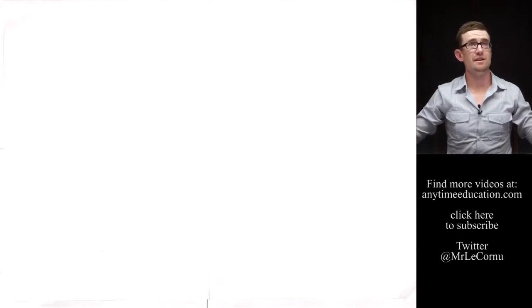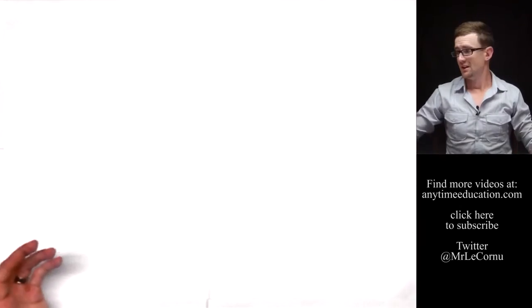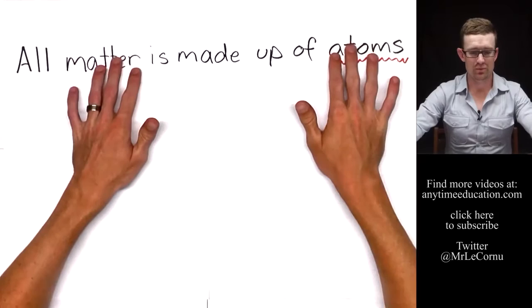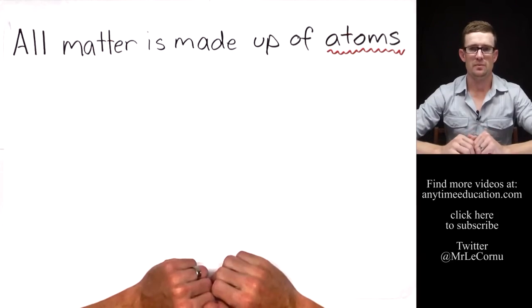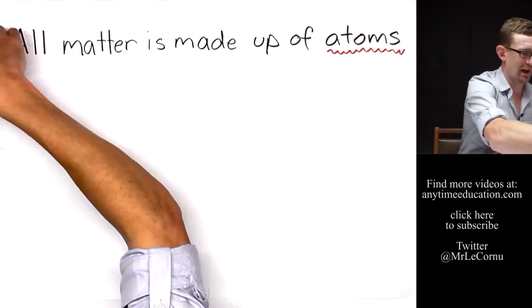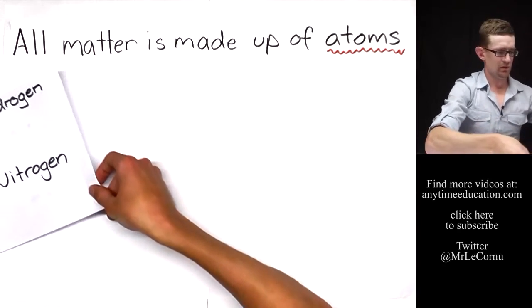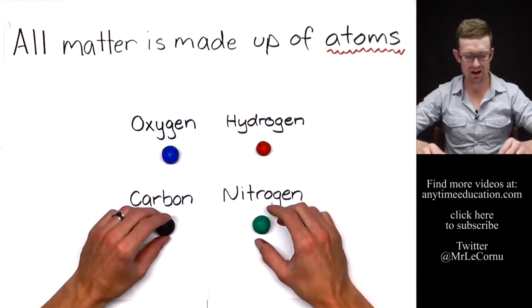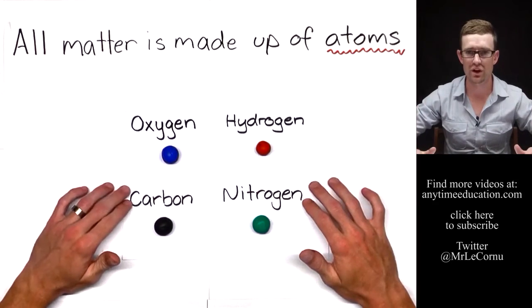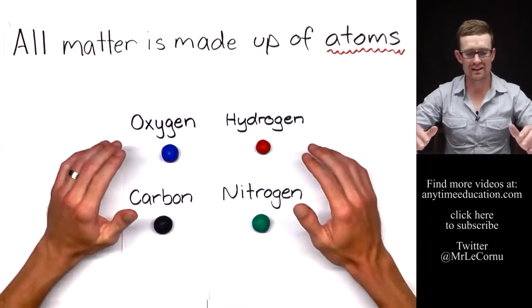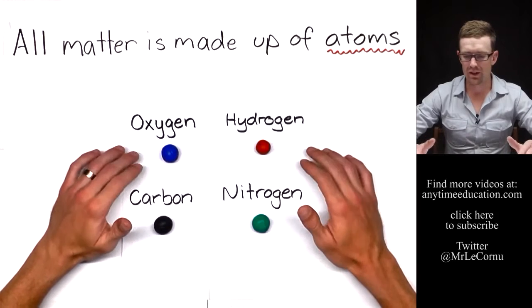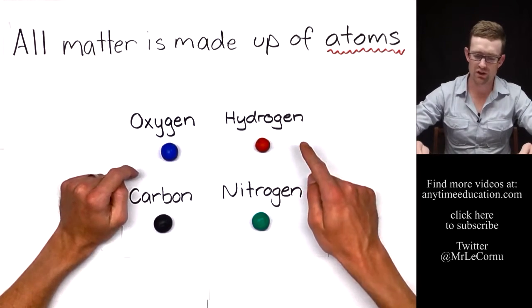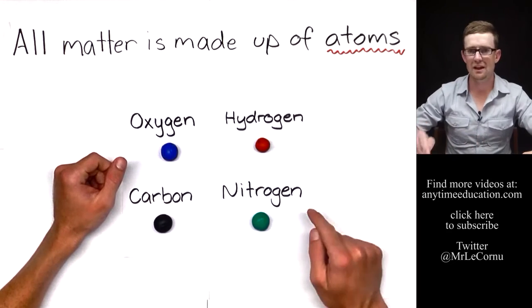The first thing we need to understand is that everything is made of matter and all matter is made up of atoms. I've got some example atoms here. Bear in mind that there are over a hundred different types of atoms, and these are just a few but they're ones that are really common in living things: oxygen, hydrogen, carbon, and nitrogen.